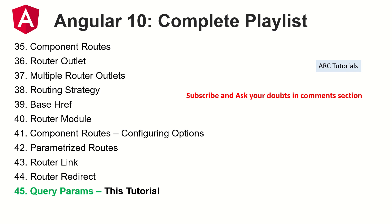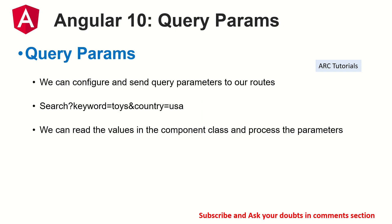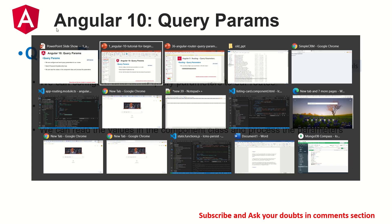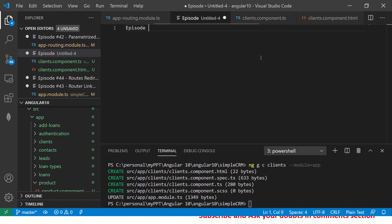So what are query params? We can easily configure and send query params in our routes. If you look at the URL it would look something like this: a question mark followed by a key equal to a value, and then another key equal to some value, and so on. Whenever in any application you see a search or filter feature, that's the most common use case for query params.